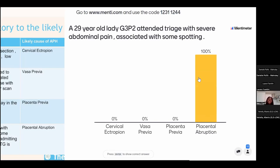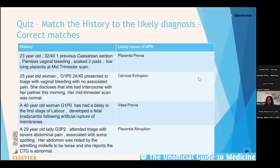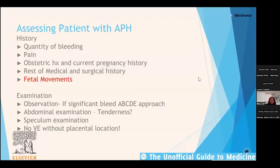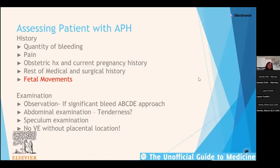The fourth case is placental abruption — the key feature is abdominal pain. Don't be fooled by the amount of bleeding, because with placental abruption the bleeding can be concealed within the abdomen. The diagnosis is based on the history and characteristic features of the problem.